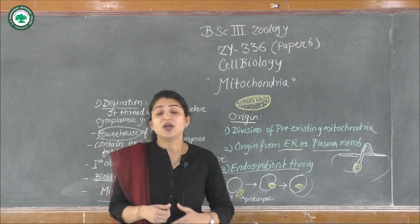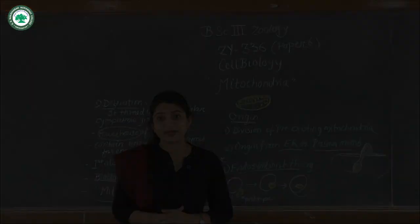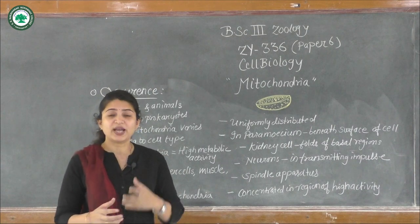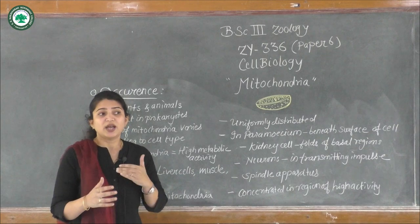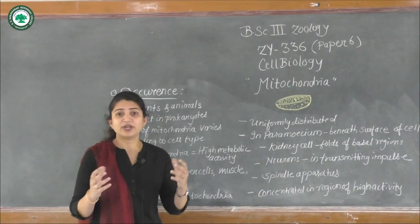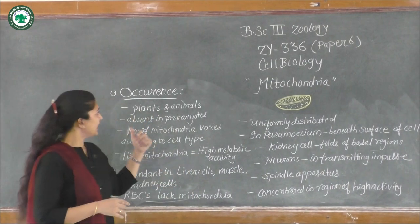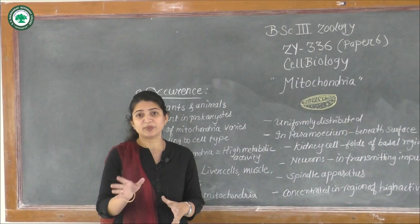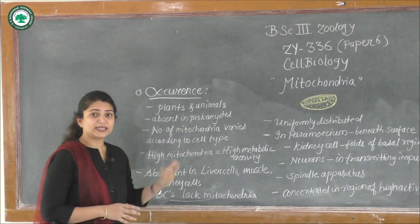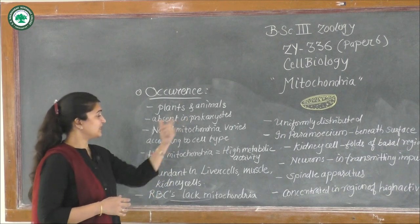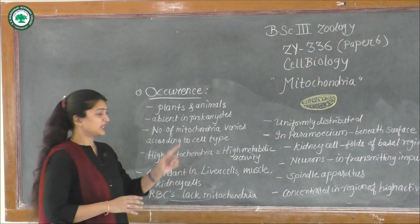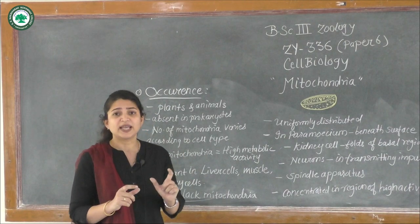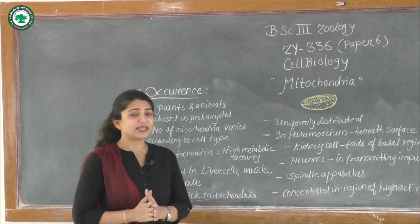Now let us see the occurrence and ultrastructure of mitochondria. Mitochondria occur in plants and animals — in most eukaryotic cells. They are absent in prokaryotes. This is an important point: whenever you are asked in competitive exams, be sure that mitochondria are always absent in prokaryotes.